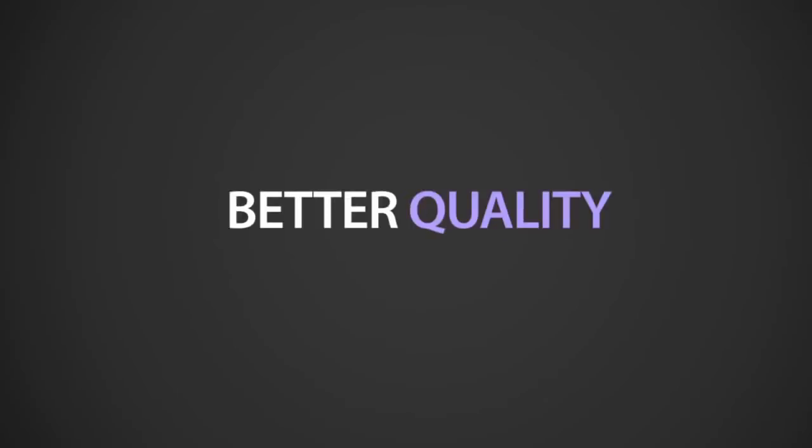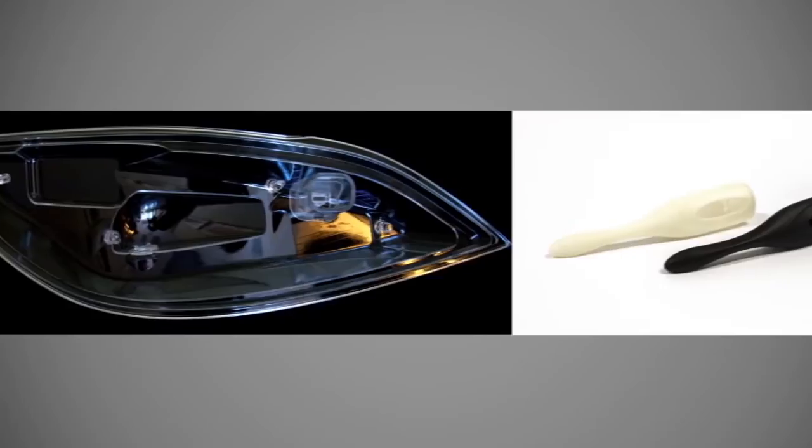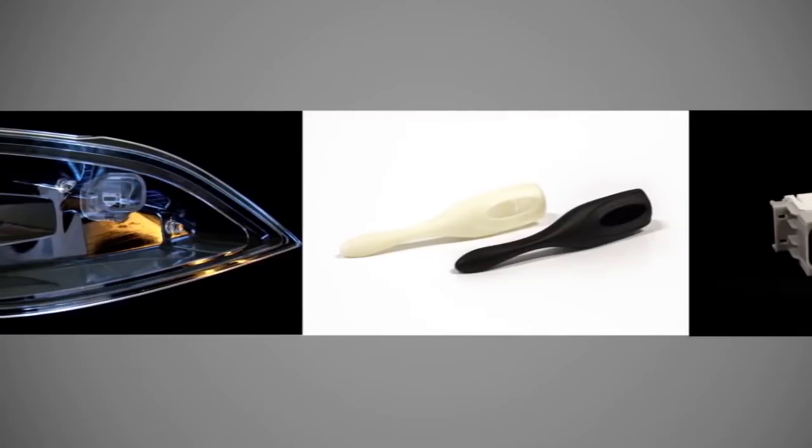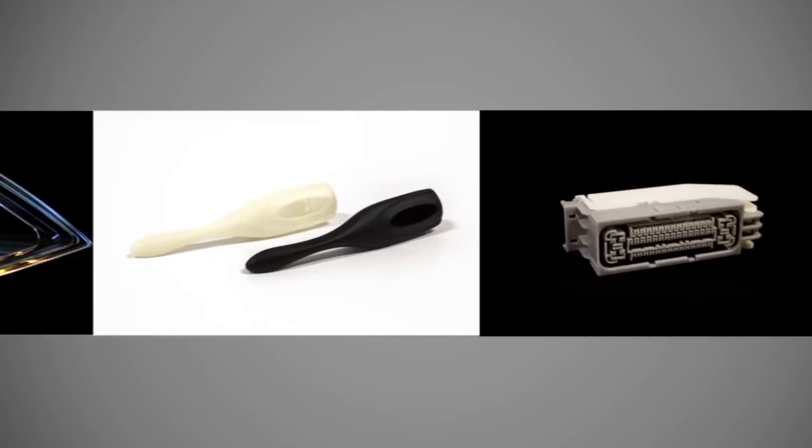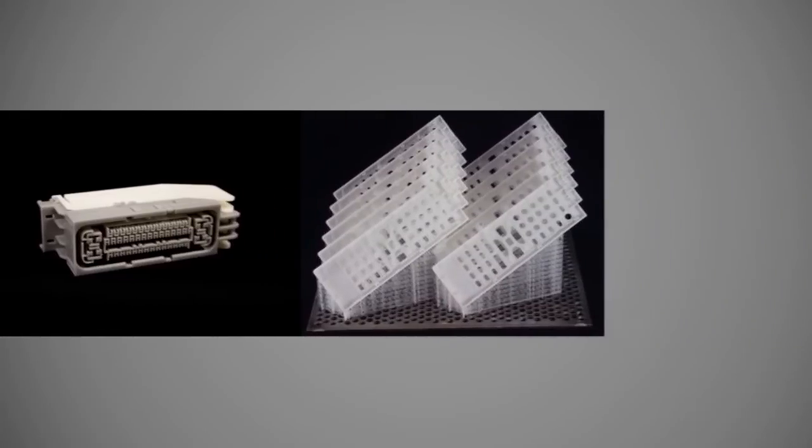The ProJet 6000 and 7000 deliver legendary SLA quality and precision. The super smooth surface finish and fine detail for small parts make this a perfect fit for snap-fit assemblies, functional prototypes, master and direct casting patterns, and more.